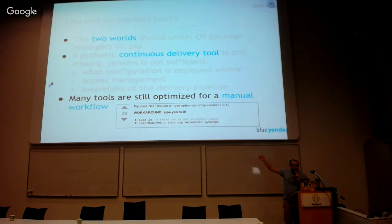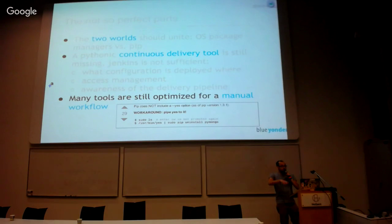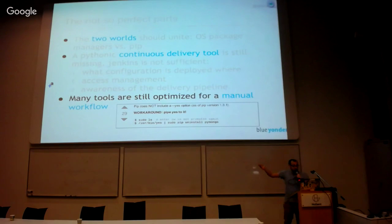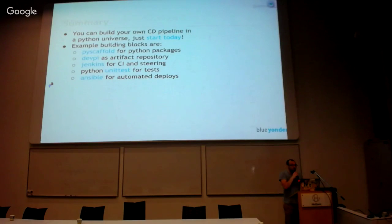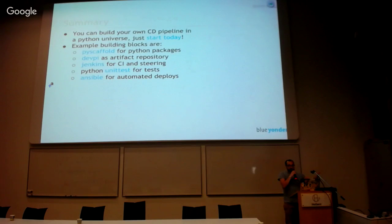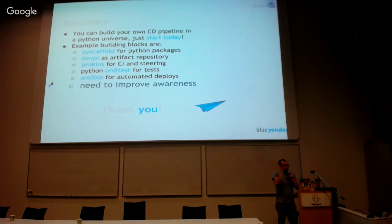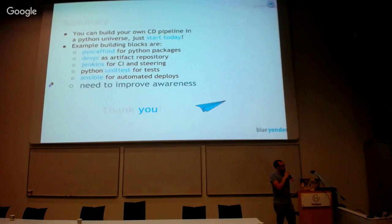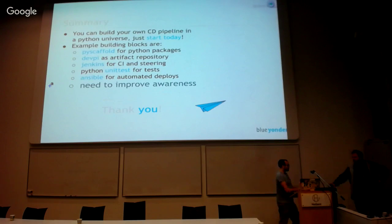But that's not specific to Python. Many tools out there are still optimized for the sysadmin sitting on the SSH console — to uninstall you need to pipe yes into the program, which is really bad for automation. So in short summary: you can do continuous delivery in the Python world. You have plenty of tools and they are all really simple — PyScaffold for packages, DevPy for artifact repositories, Jenkins for CI, normal tests, Ansible for deploys. What we need to do is improve awareness on this topic. Thank you.